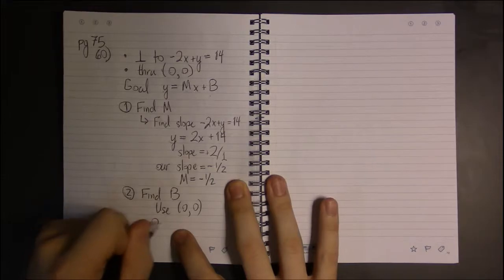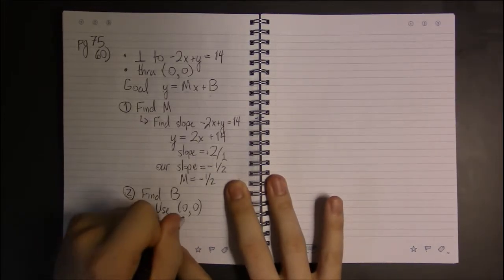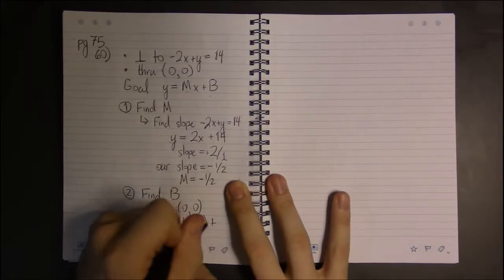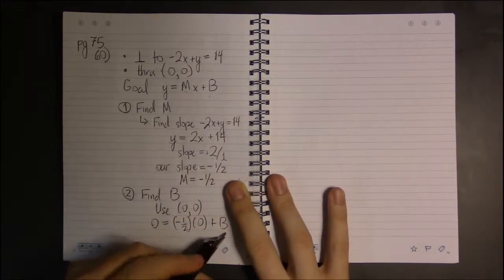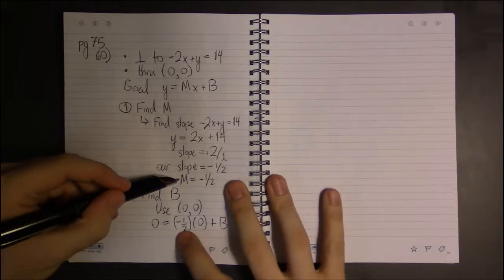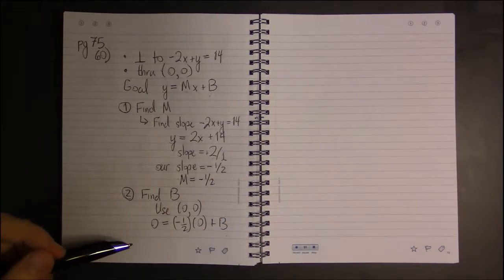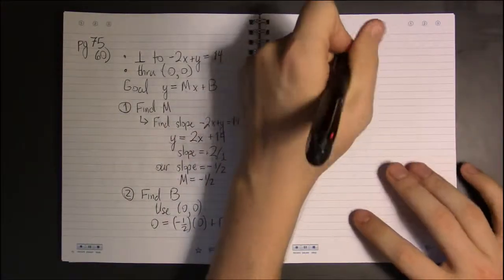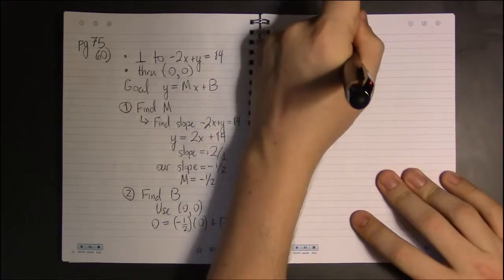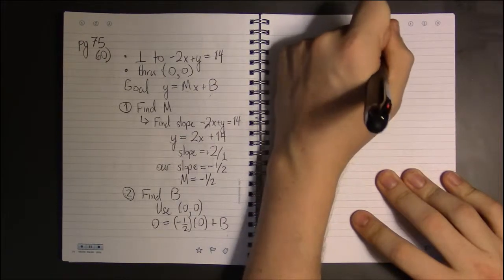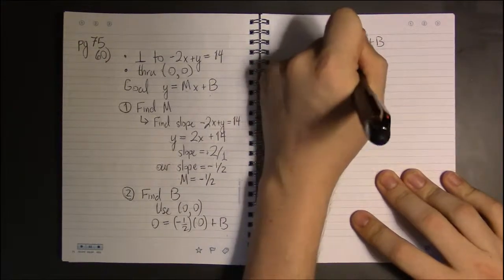So plugging in 0 for y and 0 for x, we can find b since we know m is supposed to be -1/2. Well, this is quite simple here: 0 = 0 + b, which means 0 = b, or b = 0.